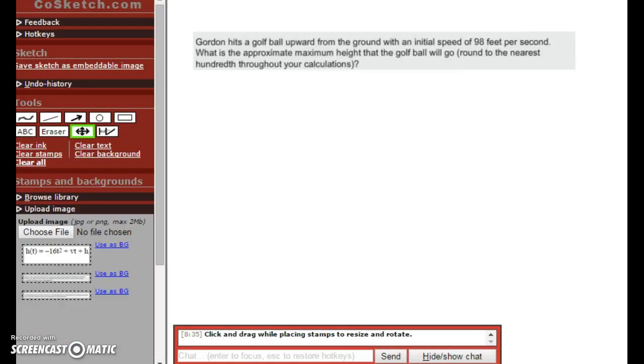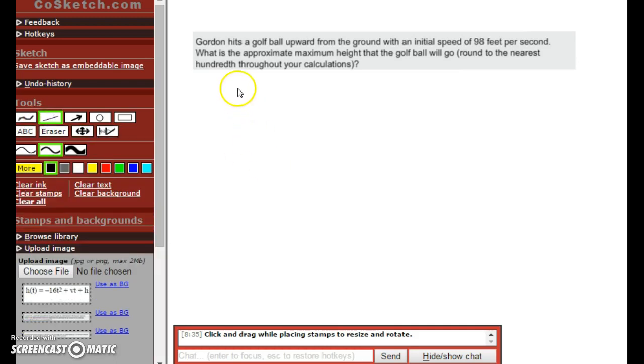Okay, now Gordon hits a golf ball upward from the ground with an initial speed of 98 feet per second. What is the approximate maximum height of the golf ball? We'll round to the nearest hundredth throughout your calculations. So let me show you how to do that. Let's draw a picture, because I always start with a picture.